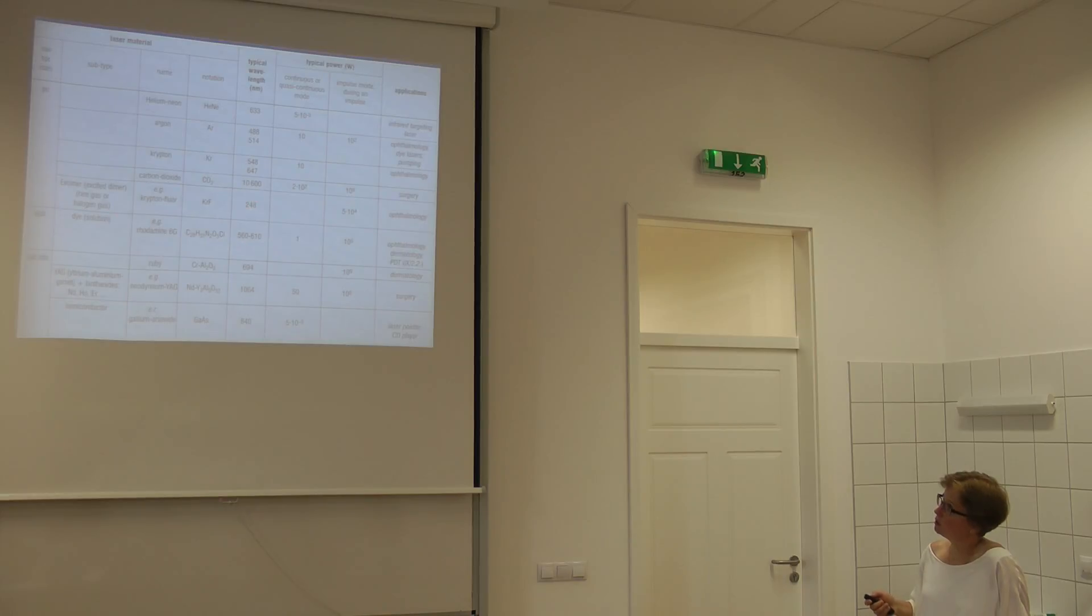Excimer lasers work in the UV. That's the shortest wavelengths that you find in this table. CO2 laser provides a laser light at 10 micrometers of wavelength. And you can find examples of any range in between.